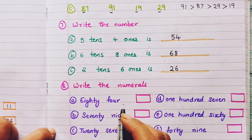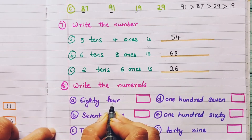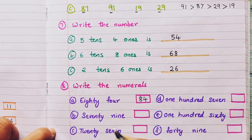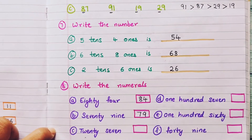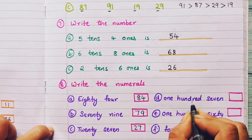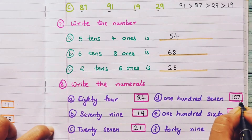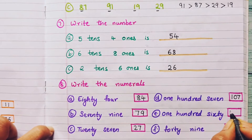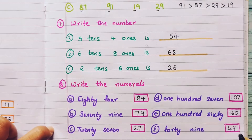Next question: write the numerals. Here they have given number names and you have to write them in numbers. Eighty-four is 84. Seventy-nine is 79. Twenty-seven is 27. One hundred and seven is 107. One hundred and sixty is 160. Forty-nine is 49.